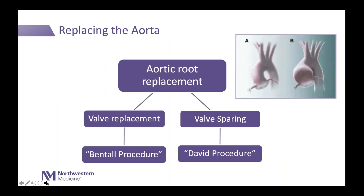The second operation we do is for patients who have an aneurysm with their bicuspid aortic valve, in which case we replace the aorta and the valve at the same time — the aortic root replacement, otherwise known as the Bentall procedure, named after surgeon Hugh Bentall. This is a complete root replacement with a valve and aorta. What many people don't know is that the bicuspid aortic valve can often be spared and even repaired. Patients with leaky, stretched-out valves are good candidates for a valve repair called a valve-sparing aortic root replacement, or the DAVID procedure.